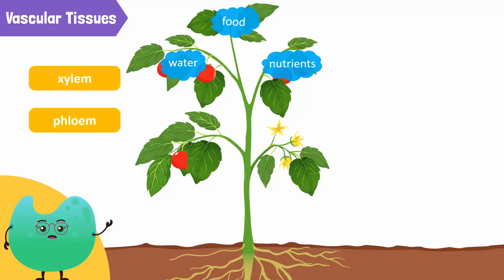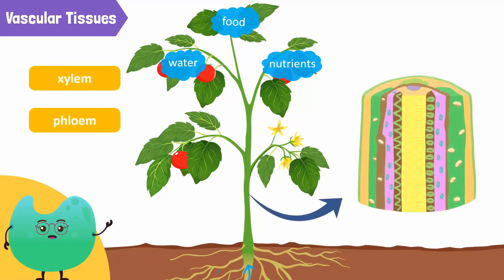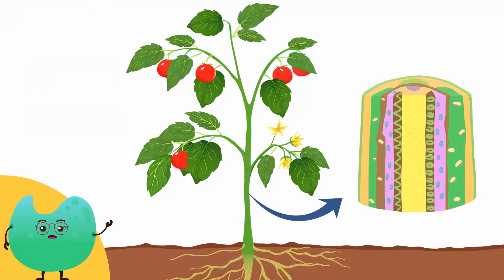These are tiny tubes running through all the parts of a plant. Xylem moves water and dissolved mineral salts from the roots to the leaves, while phloem moves food substances from the leaves where they were made to the rest of the plant.